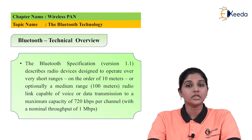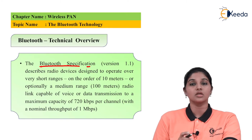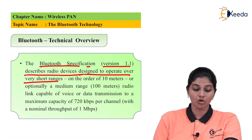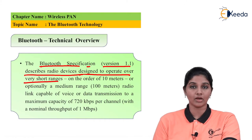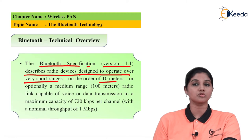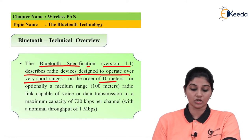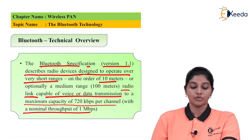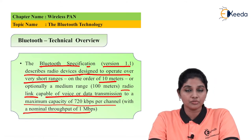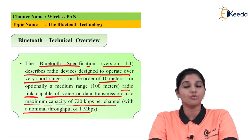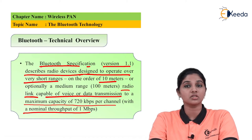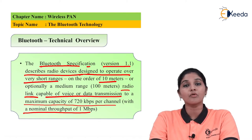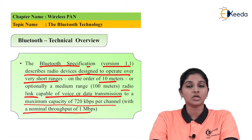Now let's look at the technical details of Bluetooth, specifically version 1.1. The Bluetooth specification describes a radio device designed to operate over very short range. The typical range covered by Bluetooth is a minimum of 10 meters and a maximum of up to 100 meters or more, depending on the version. The radio link is capable of voice and data transmission with a maximum capacity of 720 kbps per channel and a nominal throughput of 1 Mbps.